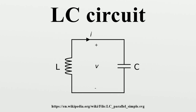At F0, line current is minimum and total impedance is maximum; in this state a circuit is called a rejector circuit. Below F0, the circuit is inductive; above F0, the circuit is capacitive. Applying the same analysis to the parallel LC circuit, the total impedance simplifies such that at resonance the impedance is infinite but finite for all other values. The parallel LC circuit connected in series with a load will act as a band-stop filter having infinite impedance at the resonant frequency. The parallel LC circuit connected in parallel with a load will act as a band-pass filter.